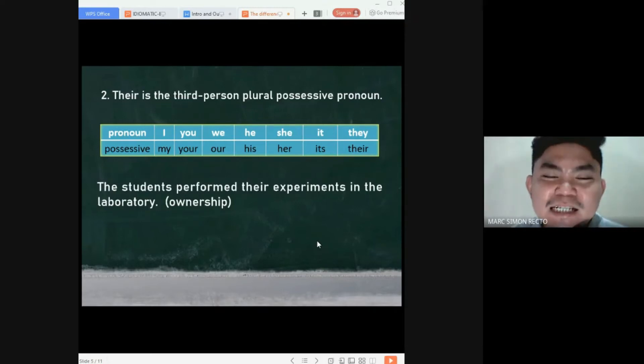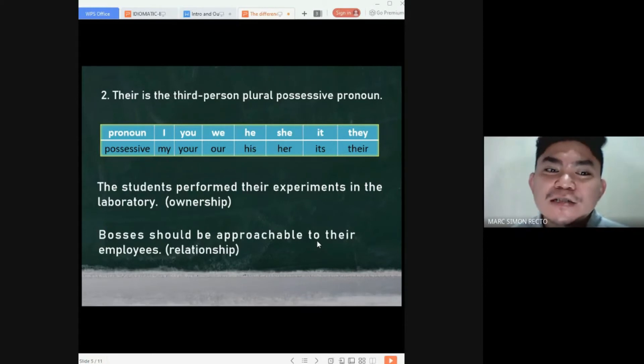First one will show ownership. The students performed their experiments in the laboratory. The word there shows ownership, meaning the experiments are owned or possessed by the students. As I mentioned earlier, the possessive pronoun concept expresses or shows ownership or relationship. We have here another sentence. Bosses should be approachable to their employees. This one shows relationship because, obviously, bosses do not own their employees. The word there only shows relationship between the bosses and the employees.